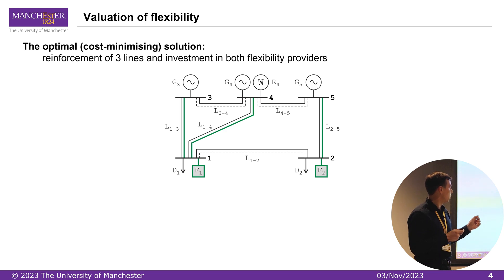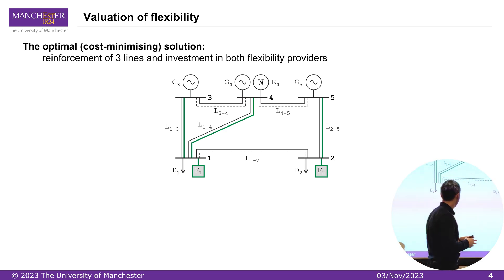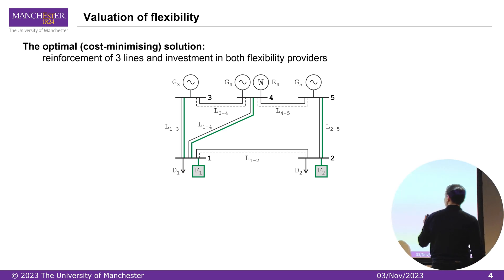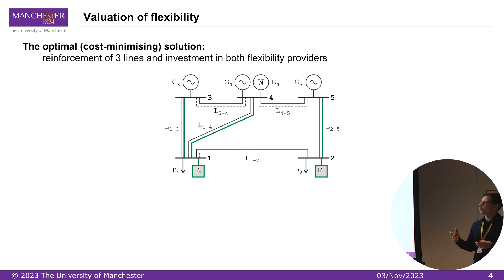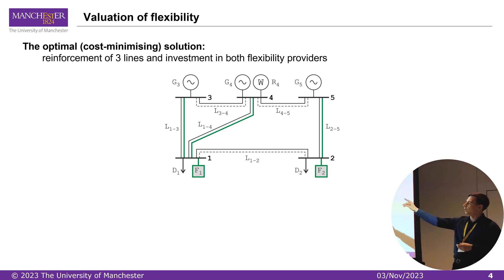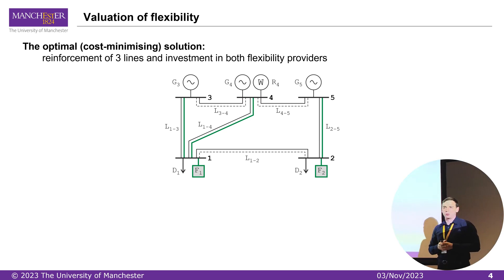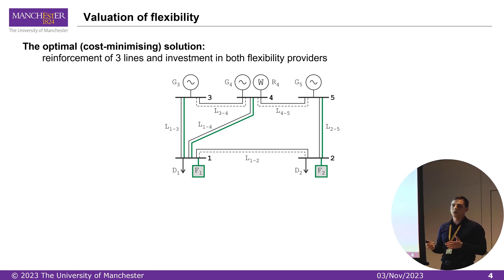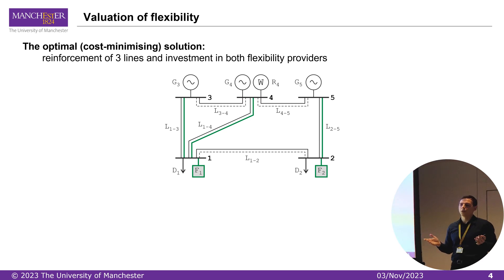Industry and academia know how to deal with this — there exist some optimization models. For this particular case, we can solve a cost-minimizing model that finds the cost-optimal solution. The solution for this system is to reinforce three lines, shown in green, and also invest in flexibility providers. At first glance this solution makes sense, because we build new lines transmitting power from generators to loads and we also build flexibility providers.